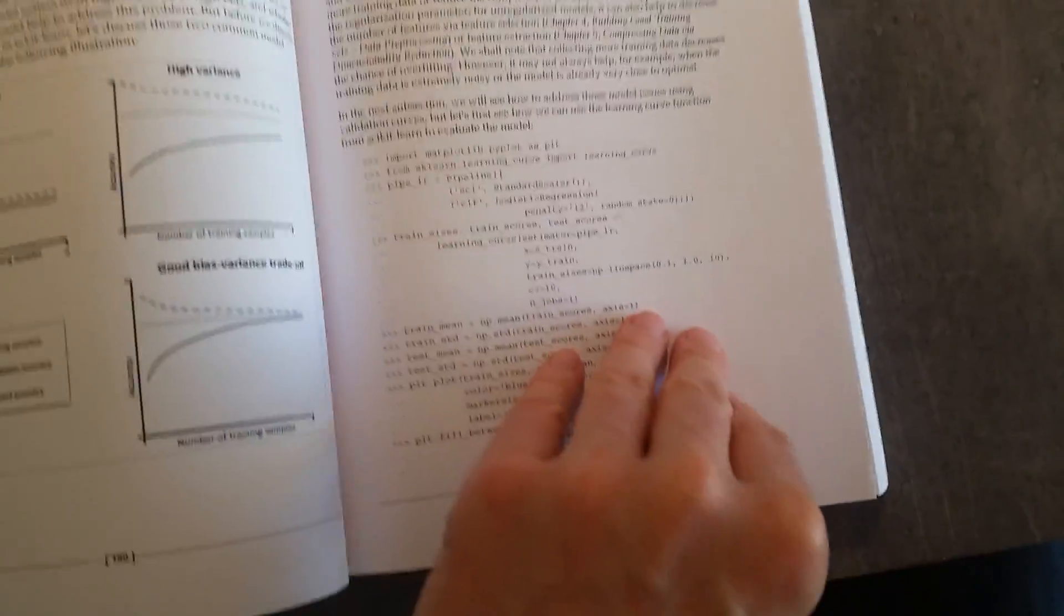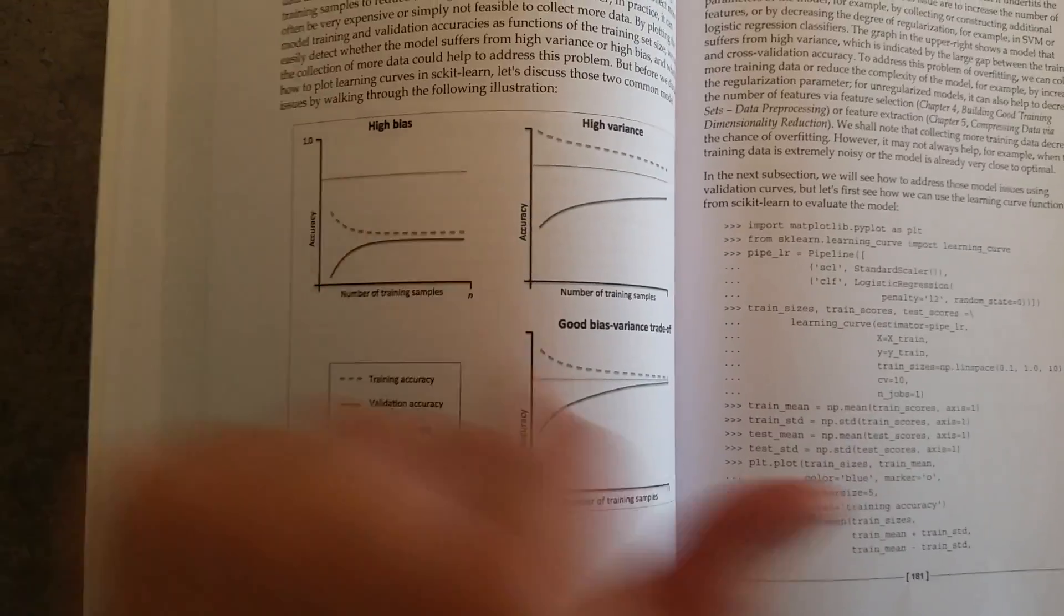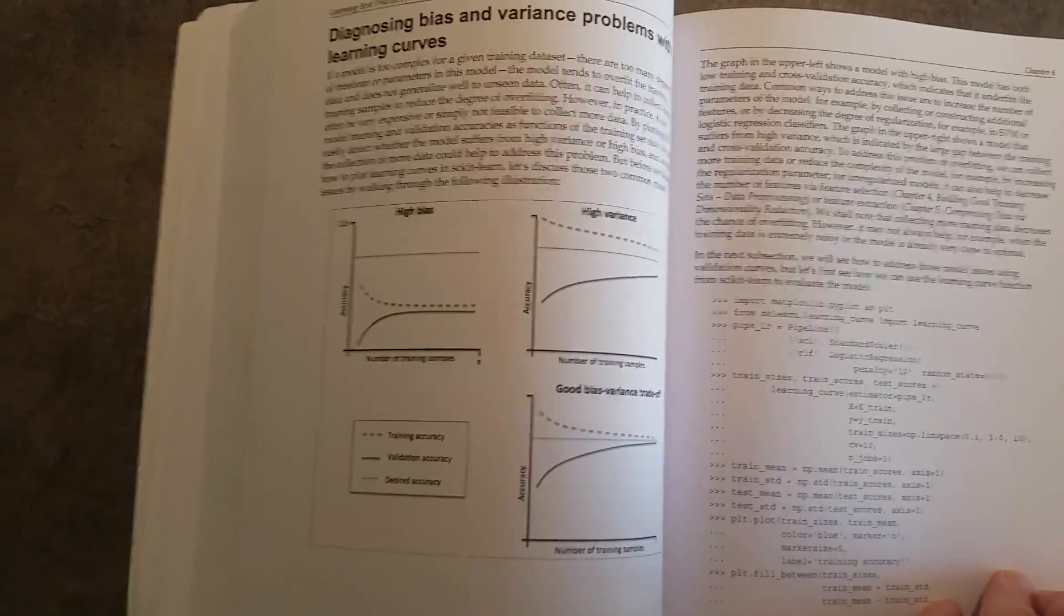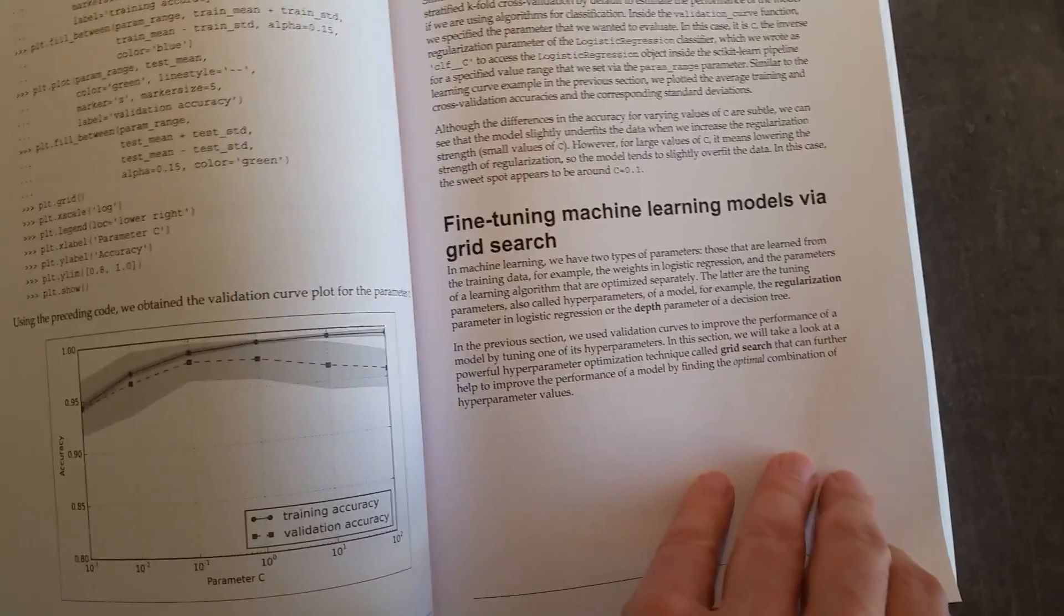And then it has ways of implementing that using Python code. It gives a really good explanation as well, the difference between bias and variance, which is a classic question, isn't it, about machine learning? If you're starting off, you're bound to be asked a question about the difference between validation and bias. And it explains it very well.